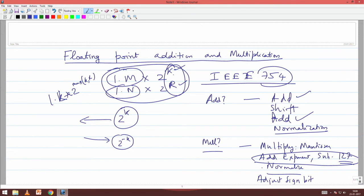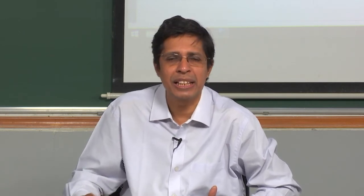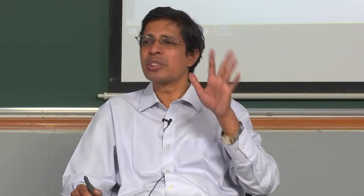Note that floating point multiplication also involves only integer multiplication and integer addition, plus normalization. So floating point arithmetic — both addition and multiplication — is essentially composed of a constant number of integer additions and integer multiplications, making it equivalent in complexity.